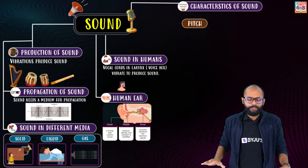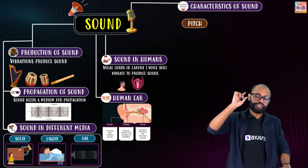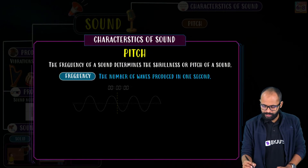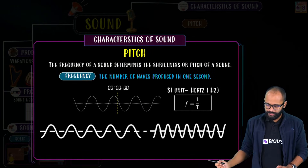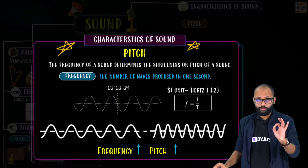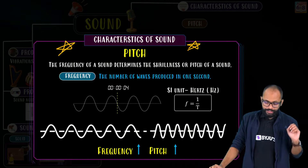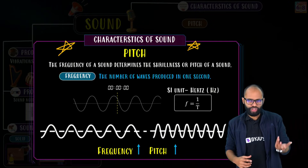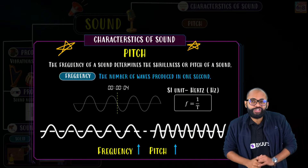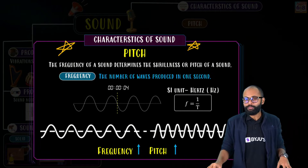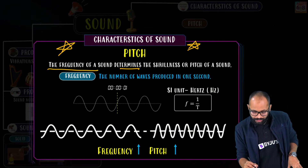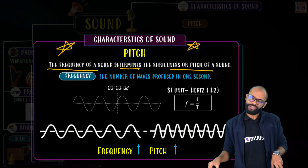To summarize: the outer ear collects sound, the middle ear amplifies it, and the inner ear converts sound into electrical signals. That is how the human ear makes us sense sound. Characteristics of sound is another very important topic — a lot of questions come from this.